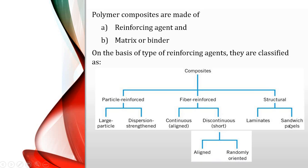An example of structural composites is plywood. Fiber reinforced composites contain fibers embedded in the polymer matrix. These fibers may be long (continuous) or short (discontinuous), and may be randomly arranged or properly arranged in a regular fashion.